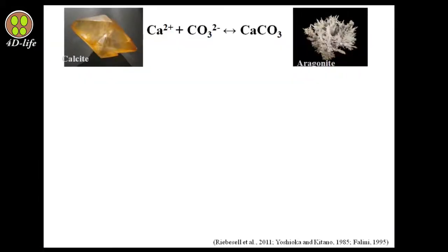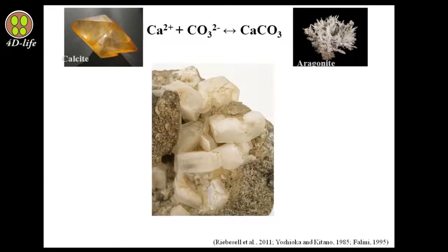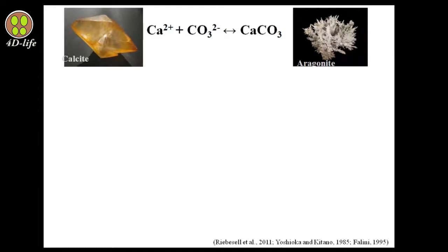Now let's talk about calcium carbonate crystal form. Aragonite, calcite, and vaterite are three different forms of calcium carbonate crystal structure. But calcite and aragonite are the most common biological forms. Aragonite and calcite precipitation and dissolution in seawater can be explained by this chemical reaction. The solubility of aragonite is 1.5 times more than calcite at 25 degrees centigrade.